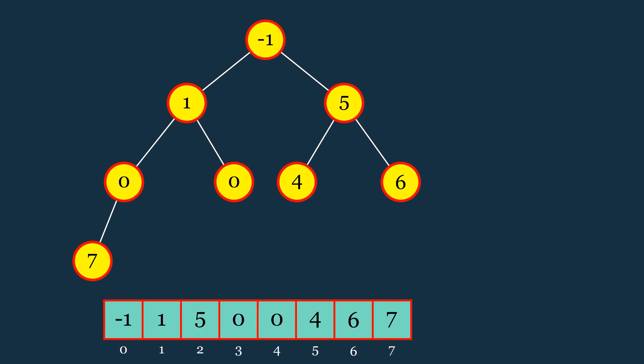The lowest non-leaf node is found at index n/2 - 1, where n is the total number of elements in the array. This is because, in a complete binary tree, all nodes from this index onward are leaf nodes, so the last non-leaf node will be one position before them.